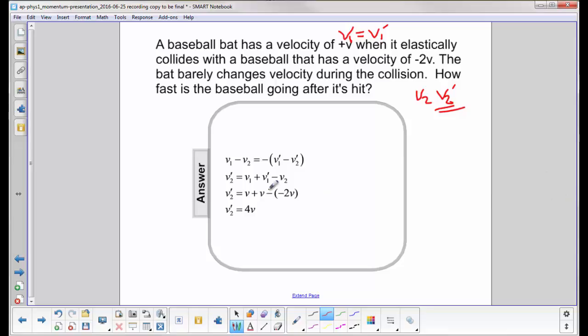So we're solving for v2 prime, we very carefully take note of the signs as we do our algebra, and find out that v2 prime is equal to v1 plus v1 prime minus v2. v1 prime up here is the same as v1, which is also equal to v, so we have v plus v minus the negative 2v of the baseball.